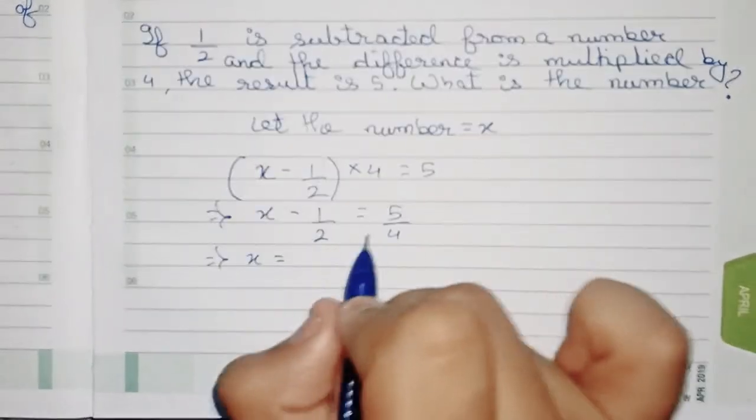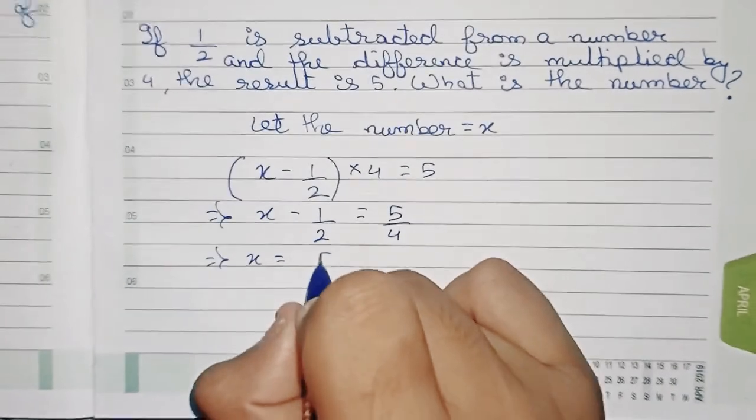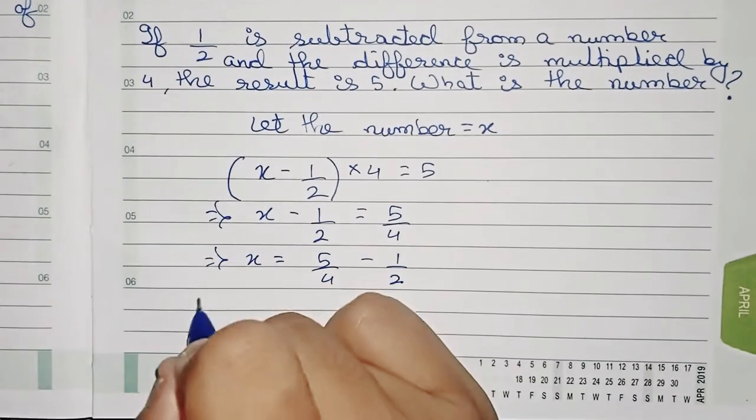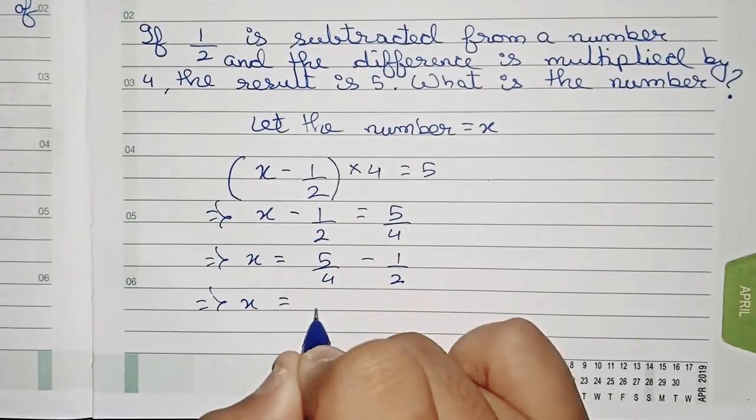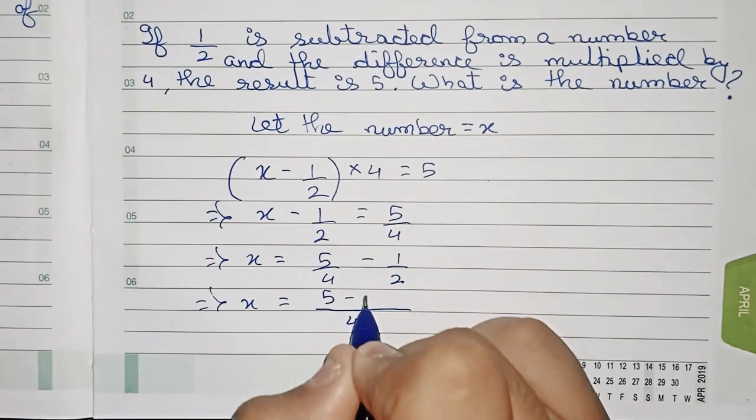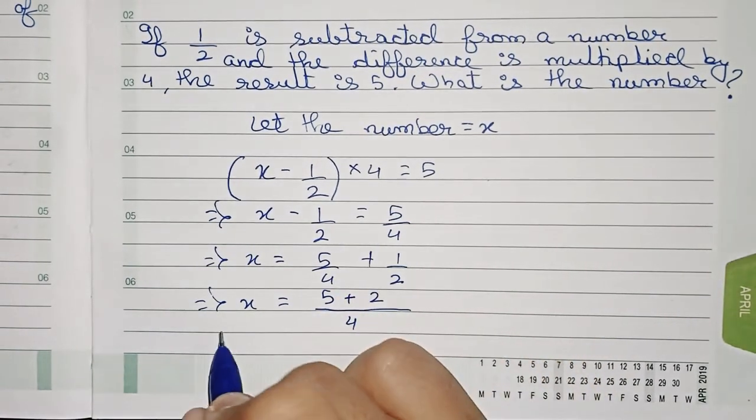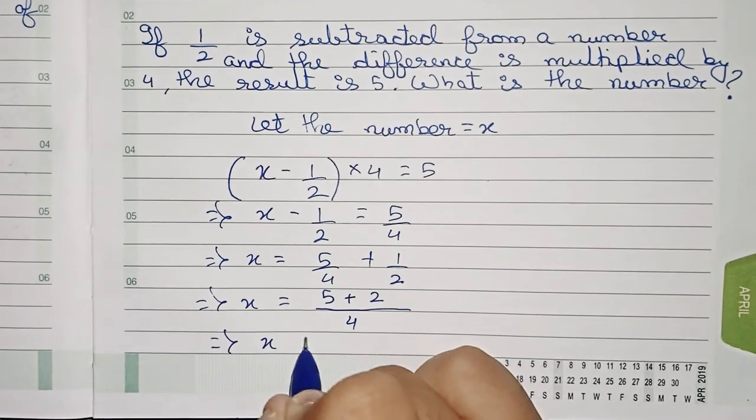Now we're taking -1/2 to the right side, so it goes for addition. So 5/4 + 1/2, which will equal x. So we take 4 as the LCM, it becomes 5 + 2, which will equal x.